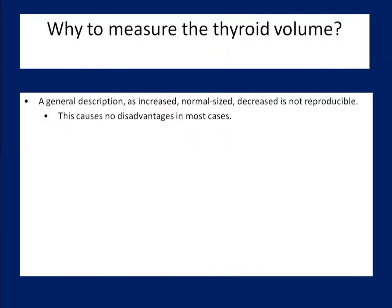Although a qualitative description of the thyroid size shares no negative consequences in most cases, that is in normal or decreased thyroids, it is advisable to give the three diameters even in this situation. Not only because of propriety, but it has relevance in quality control, may decrease the failure rate, and it may have relevance for the future if later in the course the thyroid becomes diseased. There are several clinical situations where the determination of thyroid volume is essential.